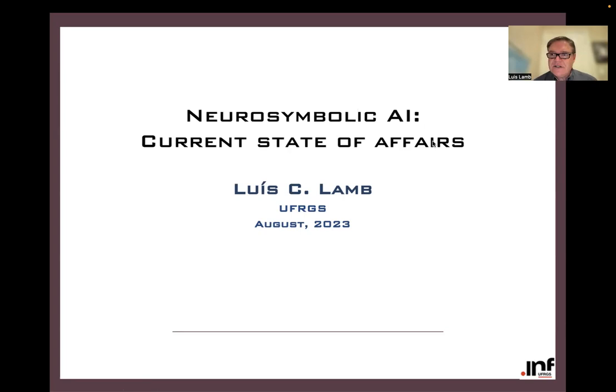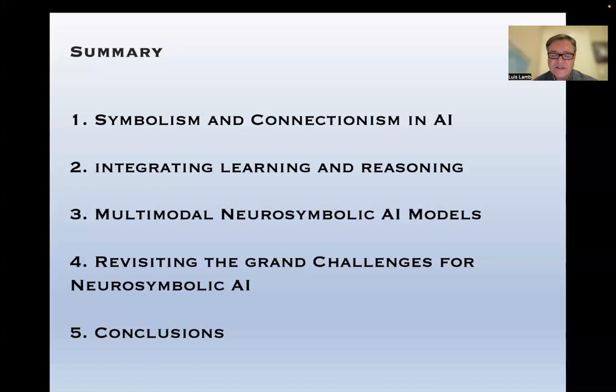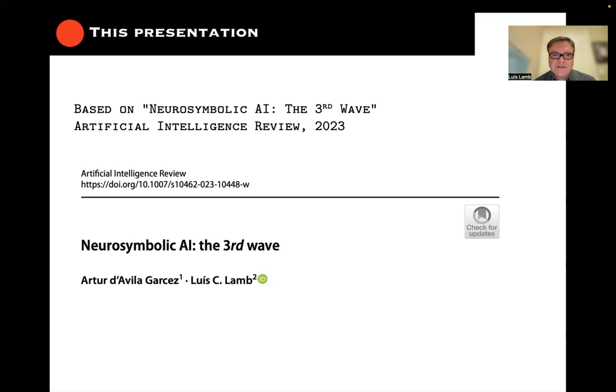In this talk, we are going to speak about the current state of affairs in Neurosymbolic Artificial Intelligence. One of the key things is to integrate symbolism and connectionism in robust AI models. We will skim over these fields briefly, speak about the importance of building multimodal Neurosymbolic AI models, revisit some of the grand challenges for Neurosymbolic AI, and conclude.